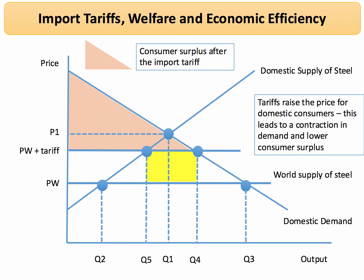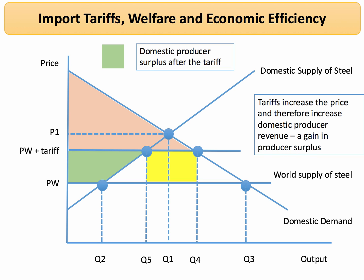Consumers lose out — they're paying more for their steel, and that's going to hit the profits of construction companies and car makers, for example. Domestic suppliers are better off in the sense that they're getting a higher price for their steel and they're producing more output. This green trapezium area here shows the additional or extra producer surplus after the tariff.